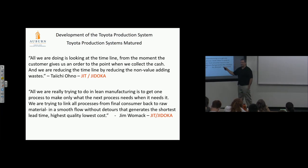Womack wanted to be pretty smart about this too. He said something very similar: 'All we are really trying to do in lean manufacturing'—this is good, this is important because he's summarizing everything—'is get one process to make only what the next process needs when it needs it. No batching. I don't build stuff people aren't using and pile it up. We're trying to link all processes from final consumer back to raw material in a smooth flow without detours that generate the shortest lead time, highest quality, lowest cost.' We'll get into that after this boring history—we'll start talking about these systems.